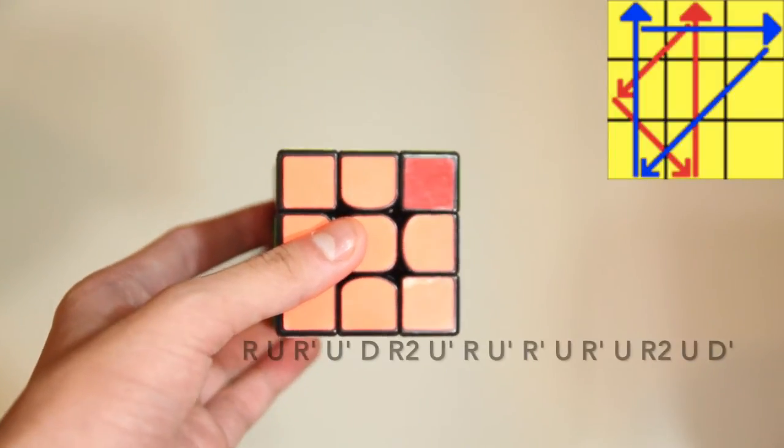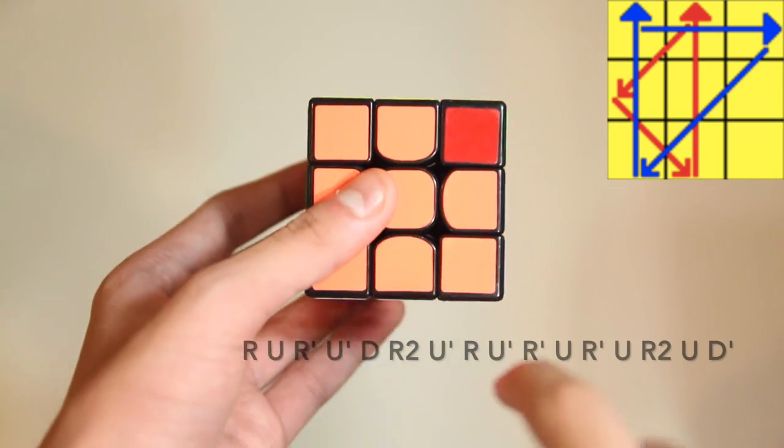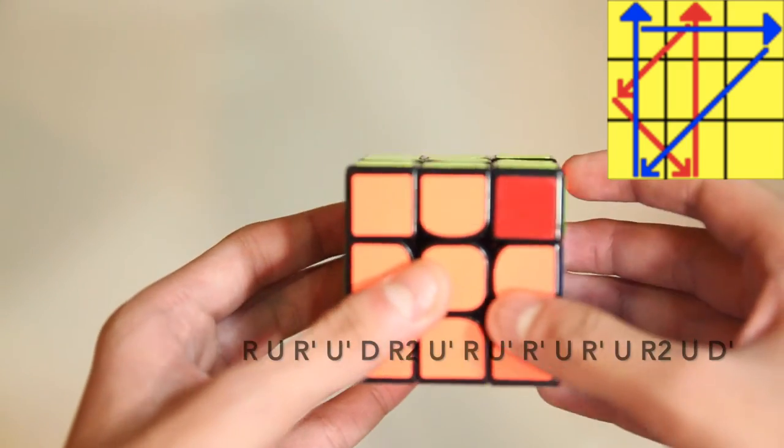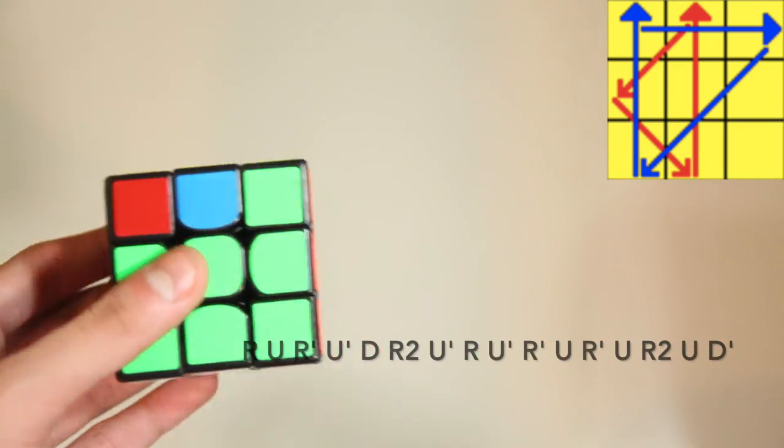This is the G D-perm. It's by far my favorite G-perm out of the four. So again, block on the left. And opposite colors adjacent to each other. This time we're facing the opposite colors. And we do this algorithm.